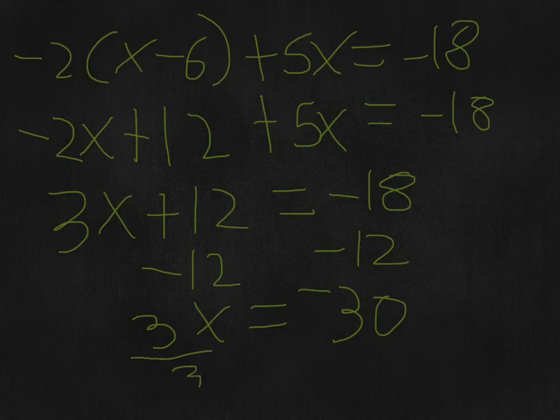Then you divide by 3, and a negative divided by a positive is a negative. So you have x = -10.